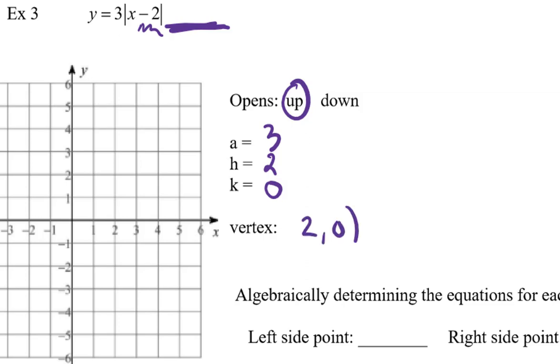So my vertex is two zero. So I go over to two, zero, and put it out. Now my a value is three, and that opens up. So on this one, we're going to have slopes of positive three and negative three. So I know that it's going to open up like this.